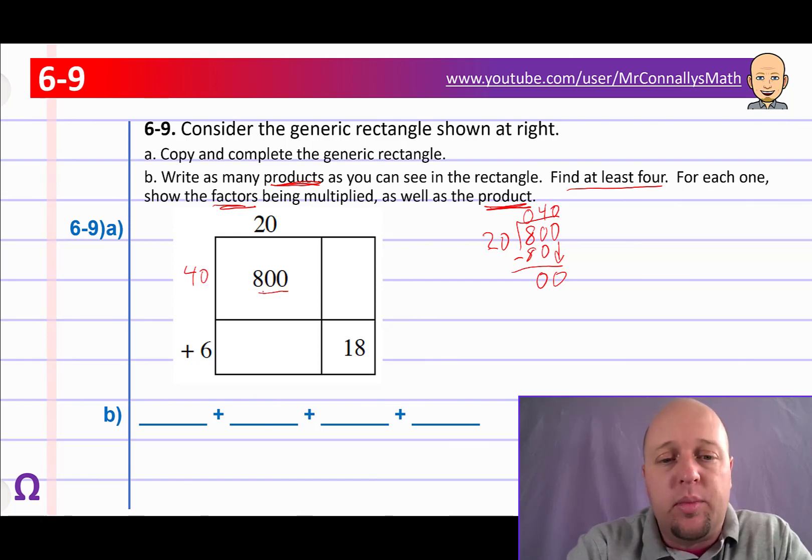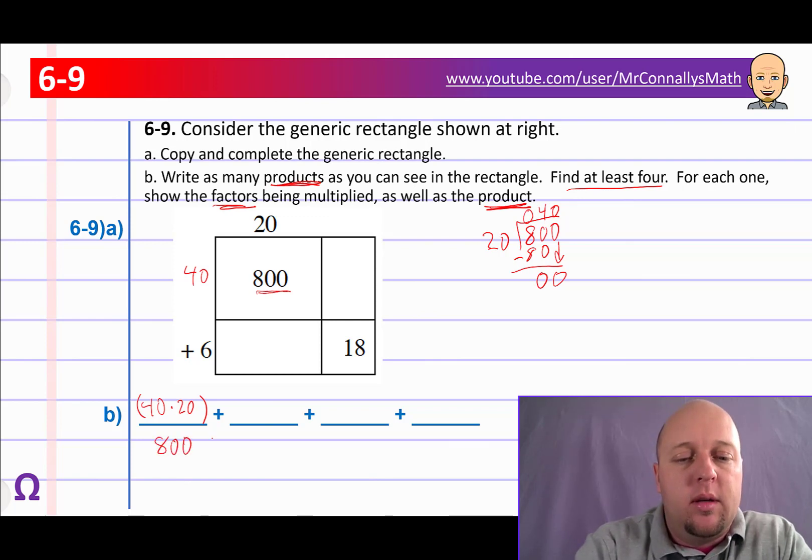So there's our first product, 800. And the two factors, 40 and 20. So it says write as many products as you can. Find at least 4 for each one. Show the factors. So we'll start with the factors. We'll say 40 times 20 goes here. And that's going to give us 800 plus. Let's find another set of factors. Over here we've got 18. So 6 goes into 18. How many times? We know that's 3. So this is going to be 6 times 3, which gives us 18. So 6 times 3 is actually 18. So 800 plus 18 is what we've got so far.